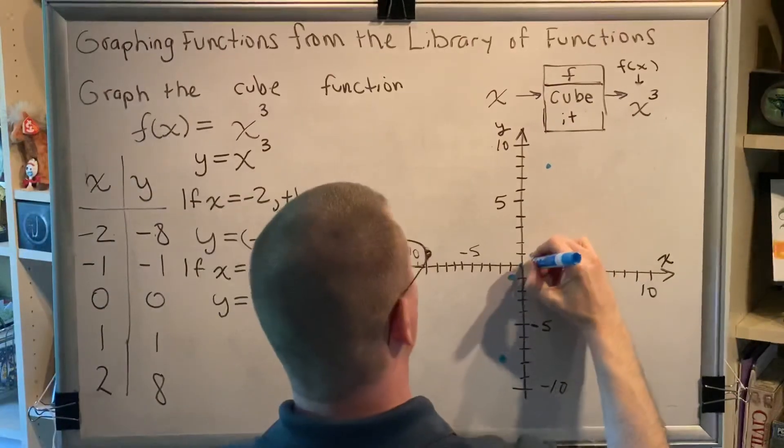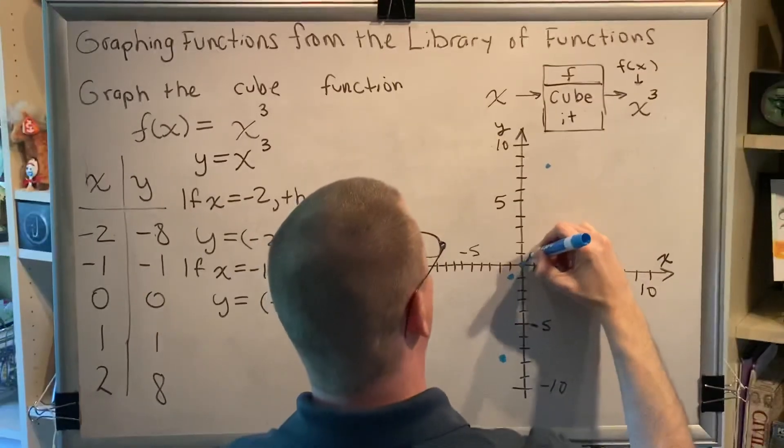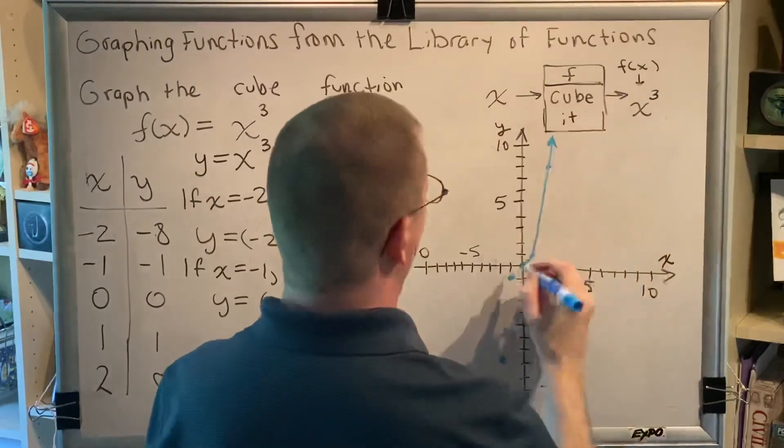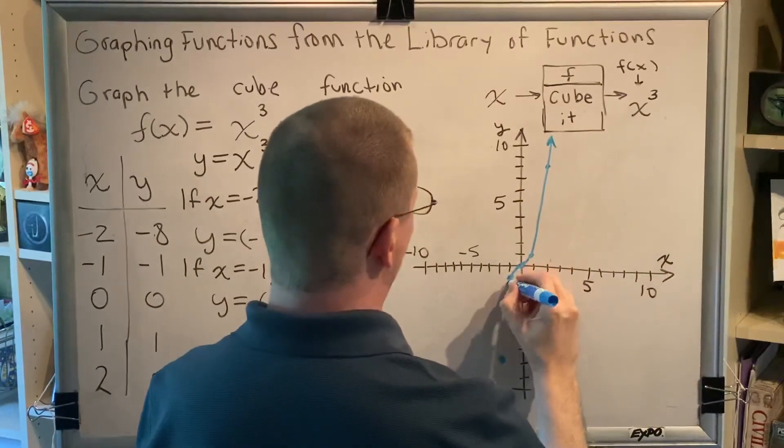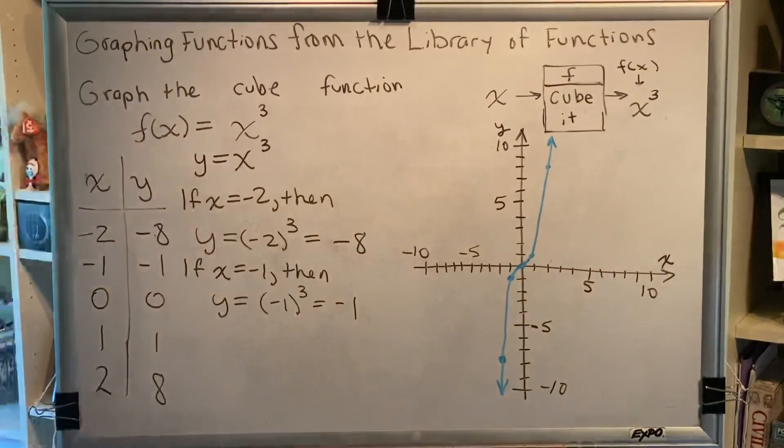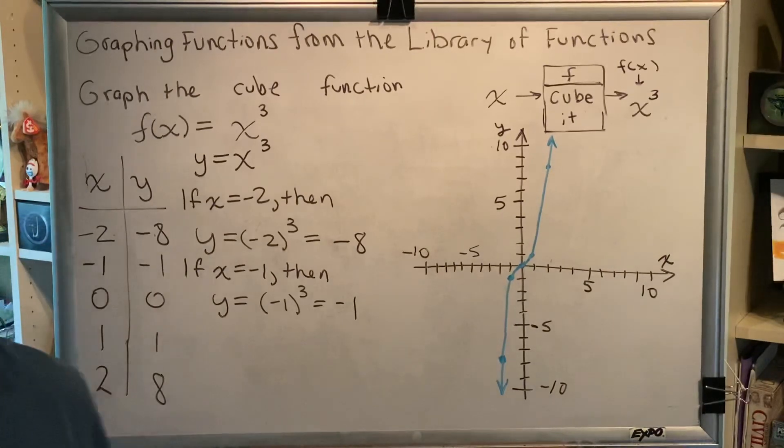And then we connect the dots. Notice this is not a line, it's a curve, so I'm not using a straight edge. You only use a straight edge for lines, line segments, and rays. This is a curve, no straight edge. And that is our graph. That is what the cube function looks like.